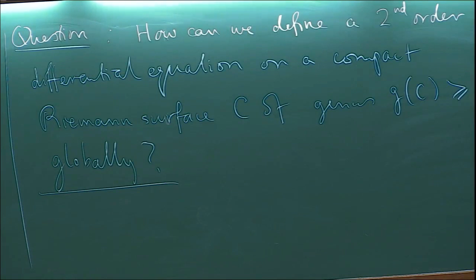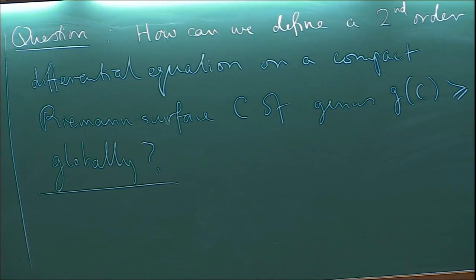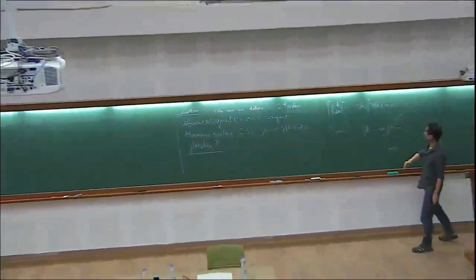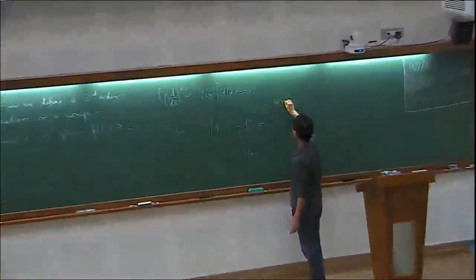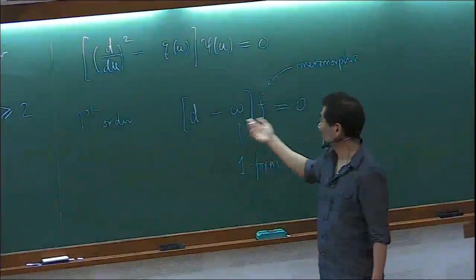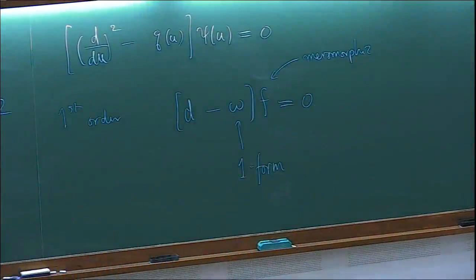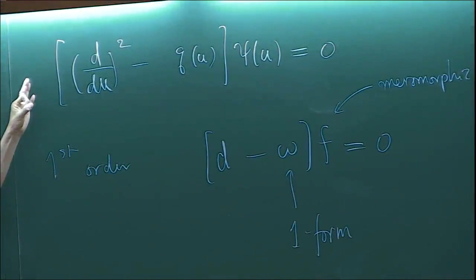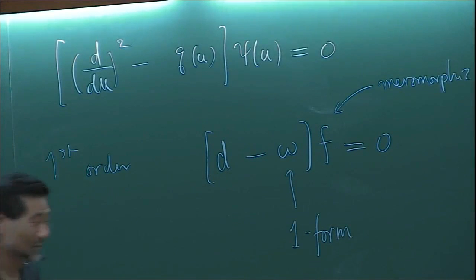For the first-order case, the answer is easy. Instead of differentiation you use the exterior derivative, and make omega applied to f equal to zero, where omega is a holomorphic one-form. There is no global holomorphic function, so I take a meromorphic function. This equation is globally defined if omega is a globally defined holomorphic one-form — it's coordinate-free. But for the second-order case: d squared equals zero, so you cannot use d. What do you do?